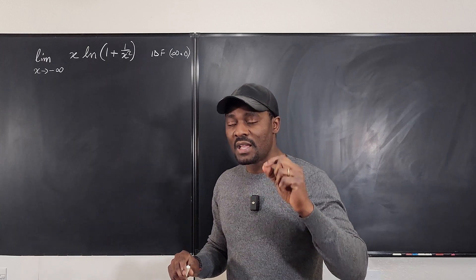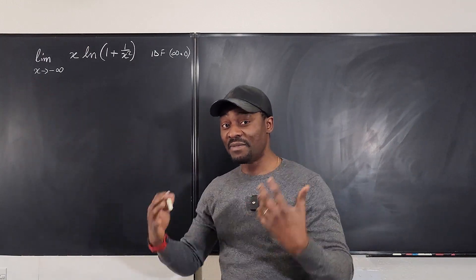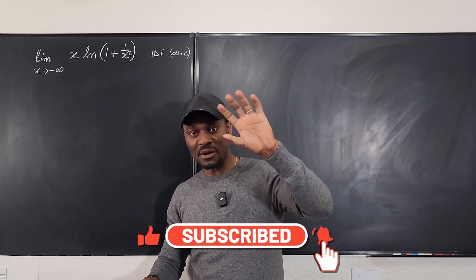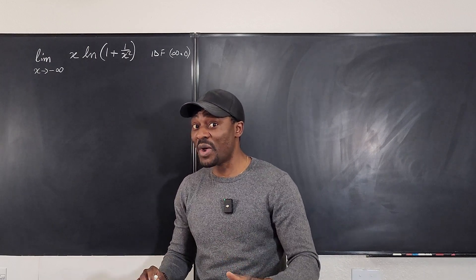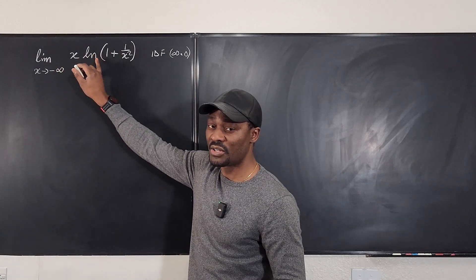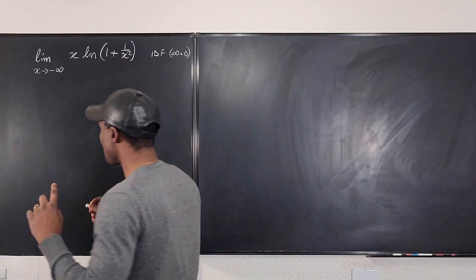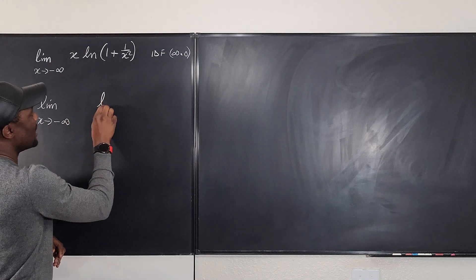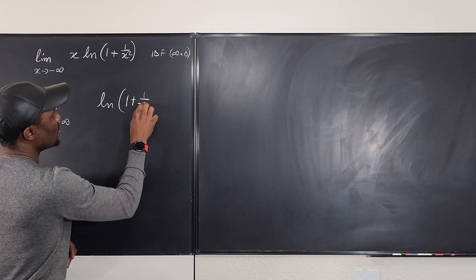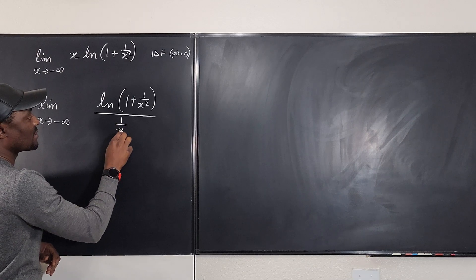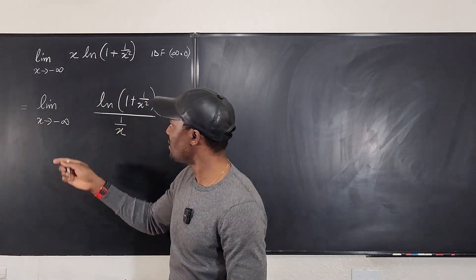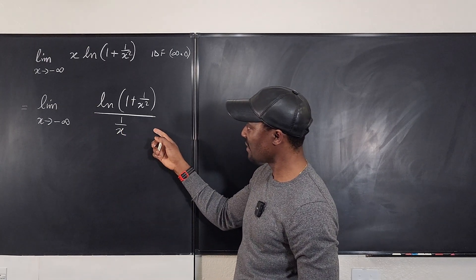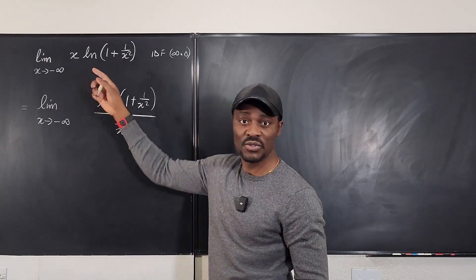So what's the trick? What you want to do in order to effectively use infinity — whether positive or negative — is to have fractions. Is there a way we can write this expression so that we have something over something? The easiest way is to look at what is multiplying this function and bring it down and write it as a fraction. So I'm going to say this is equal to the limit as x goes to negative infinity of the natural log of 1 plus 1 over x squared, divided by 1 over x. What I've done is written x as 1 over x and pushed it down.